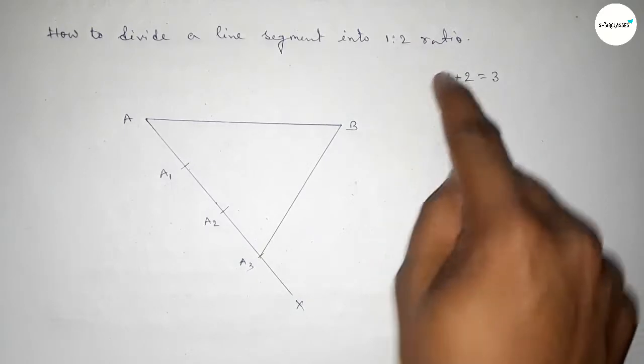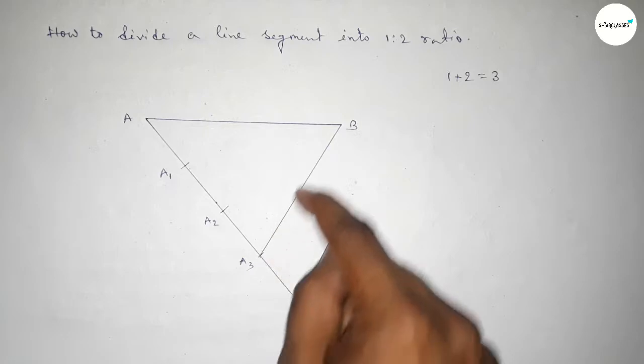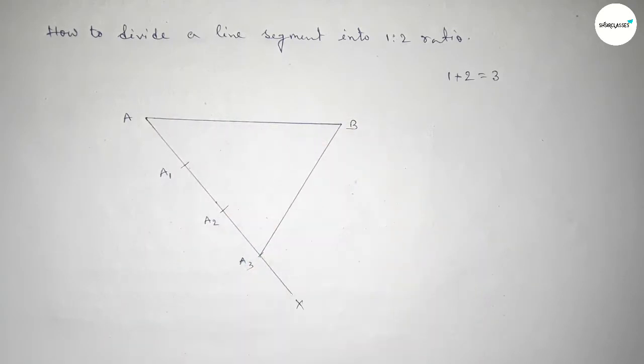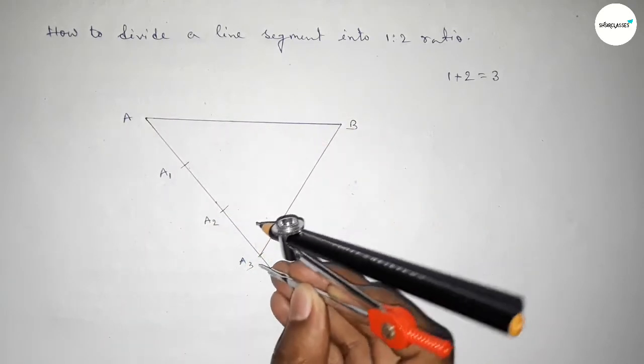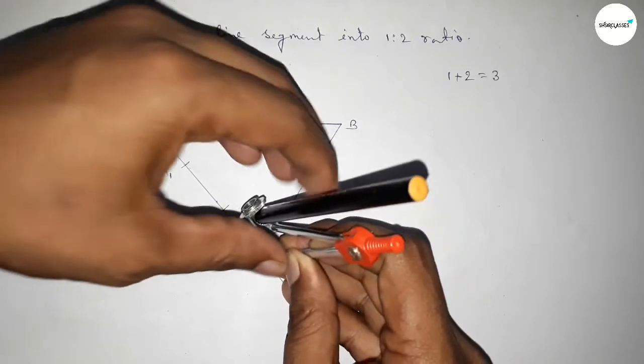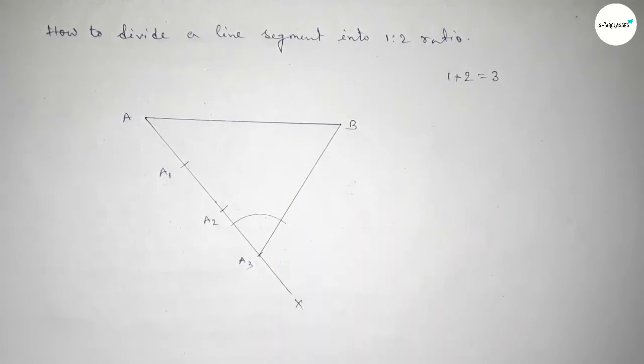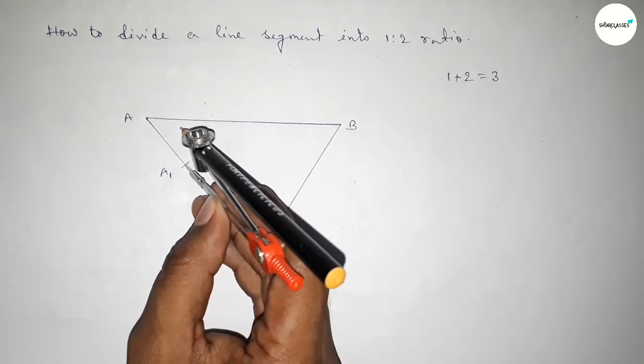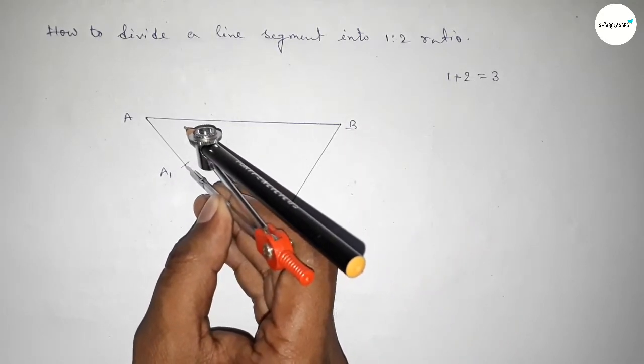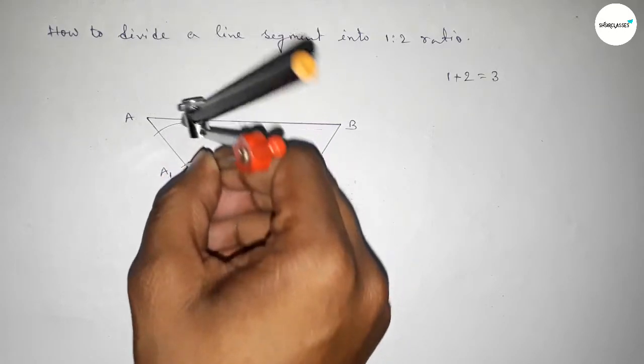So first putting the compass here and taking any length and drawing an arc by this way. With same length, putting the compass on the point A1 and we have to draw here an arc.